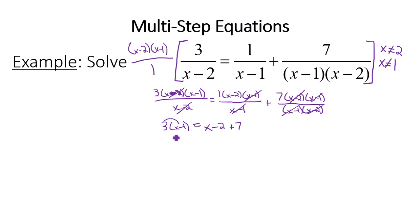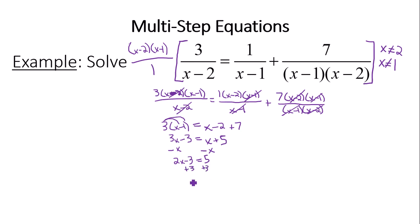On the left side we distribute to get 3x minus 3, and on the right side we combine like terms to get x plus 7. Subtracting x from both sides gives 2x minus 3 equals 5. Adding 3 to both sides: 2x equals 8. Dividing both sides by 2, we get x equals 4. Is 4 allowed? Yes — only 1 and 2 are prohibited. So x equals 4 is our final answer.